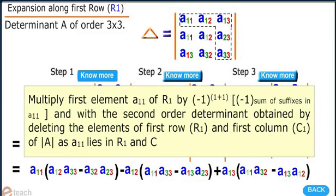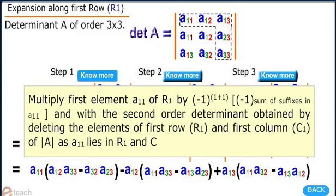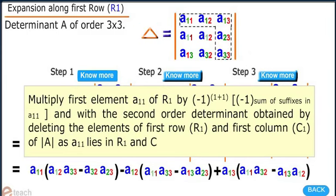Step 1: We multiply the first element A11 of row R1 by (-1)^(1+1), where the exponent is the sum of suffixes in A11, and multiply with the second-order determinant obtained by deleting the elements of first row R1 and first column C1, since A11 lies in R1 and C1.